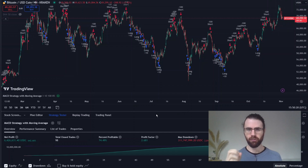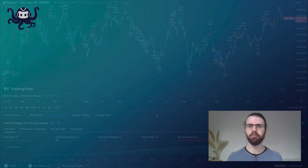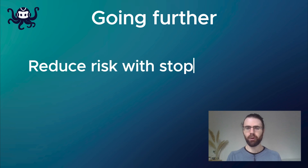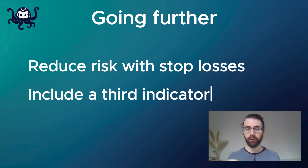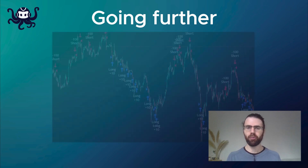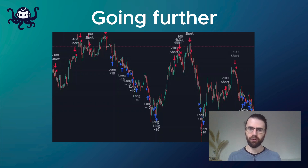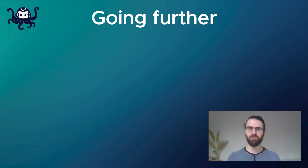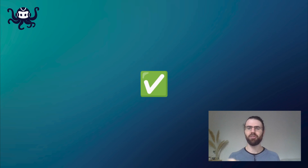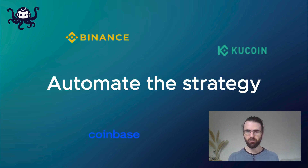Our strategy seems to be really good right now. Of course, we could go further — for example, create stop losses to reduce risk, or use a third indicator to make signals more accurate. We can see that there are many buy orders in a row, and we could probably figure something out to reduce the number of buy orders and maybe just keep the last ones. We could spend more time improving the strategy, but let's consider it enough for this video and go ahead to see how we can automate this strategy on a live exchange.